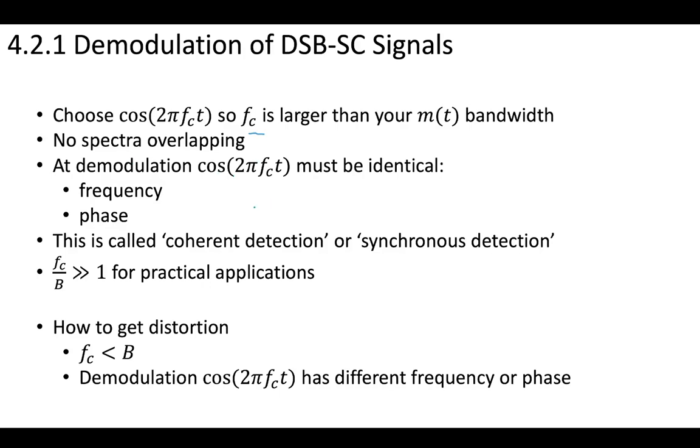And also, when you go to demodulate your message at the receiver, your demodulation cosine must be identical to the modulation cosine, and you must have a distortionless channel. This means that your demodulation cosine must have the exact same frequency and in this case, the exact same phase, which we just assumed to be zero degrees. When you do modulation and demodulation this way, the demodulation process is called coherent detection or synchronous detection.